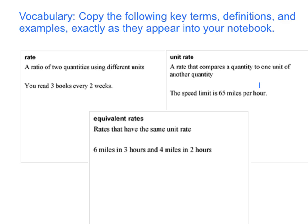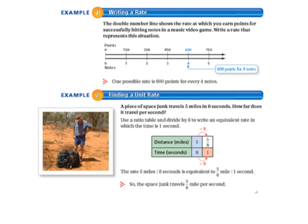Equivalent rates are rates that have the same unit rate. So 6 miles in 3 hours equals 4 miles in 2 hours. Remember that equivalent means equal. Today we'll be starting on page 206 of your math textbook.